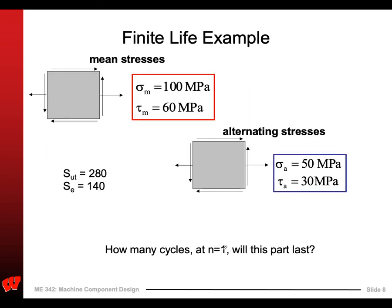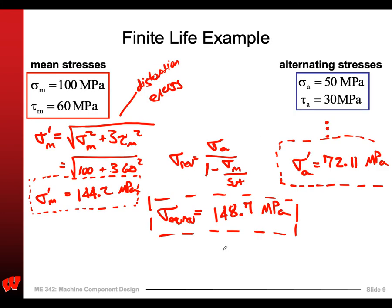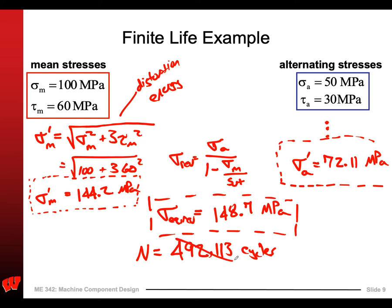So I discovered that if I take a part with this material's S-N data and stress it at 148.7 MPa fully reversed — which is the equivalent — I get approximately 492,113 cycles. That's big N — we use big N for number of cycles. This is a terrible way to write that answer; the best I can say is approximately 490,000 cycles.